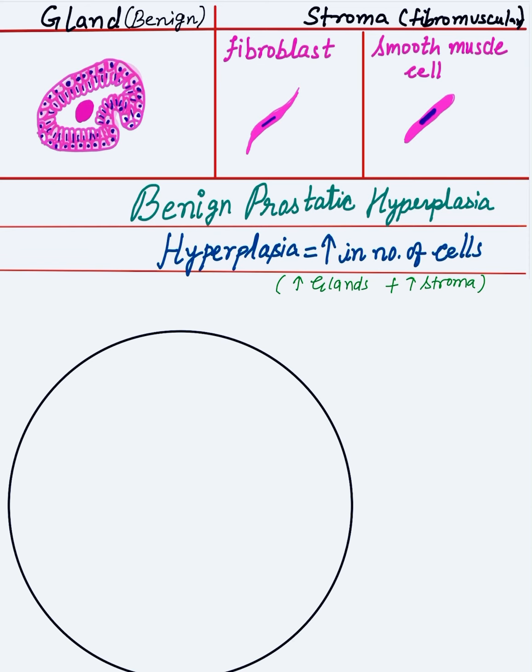Hyperplasia is an increase in the number of cells. In BPH there is an increase in the number of glands and increase in the stroma. So you have to draw glands that are visually more in number, and then draw the stroma. The gland has two layers: the inner layer is tall columnar, and the outer or basal layer is cuboidal. This two-layered epithelium is the important and significant feature of benign prostatic glands. When there is adenocarcinoma, the gland will be lined by a single layer — the basal cell layer will be lost.